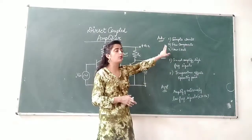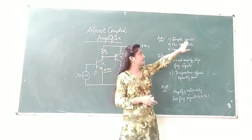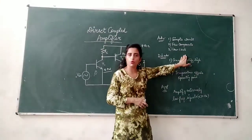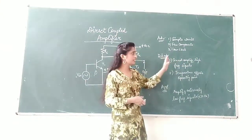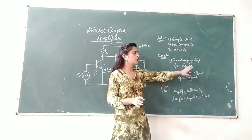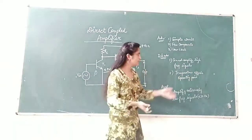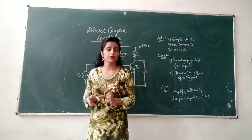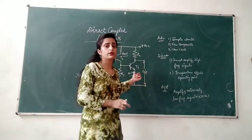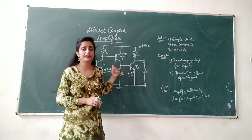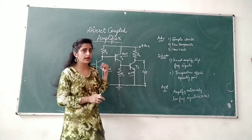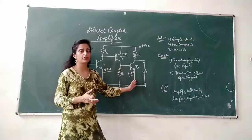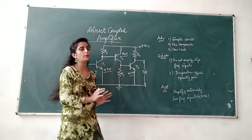The advantages of the circuit are: it is a simple circuit with a few components and with a low cost. The disadvantage is that it cannot amplify high frequency signals, and the temperature affects the operating point to some level because of the absence of any potential divider biasing circuits, but that is compensated by the complementary pair of transistors.